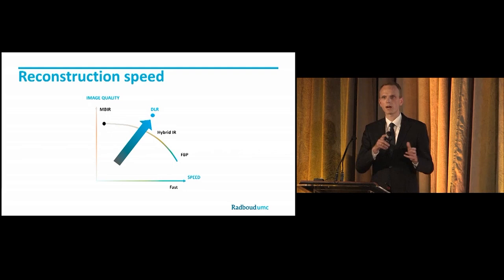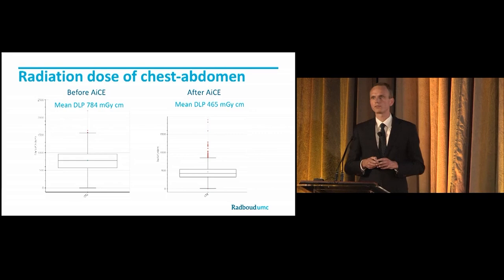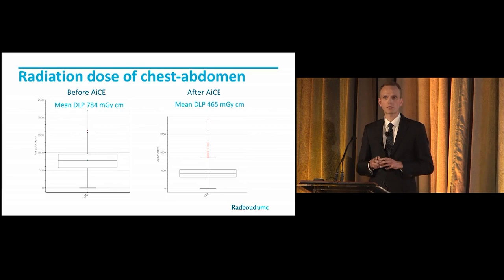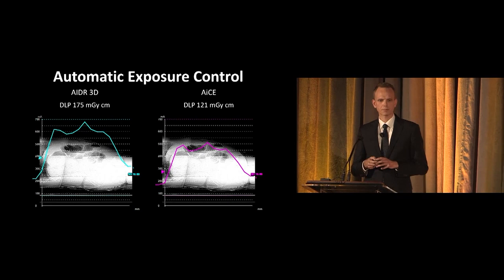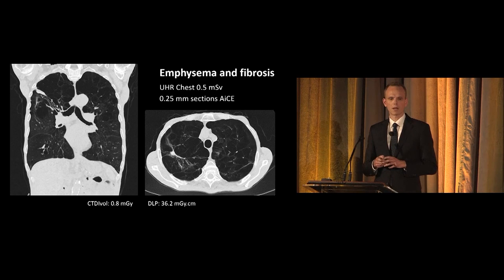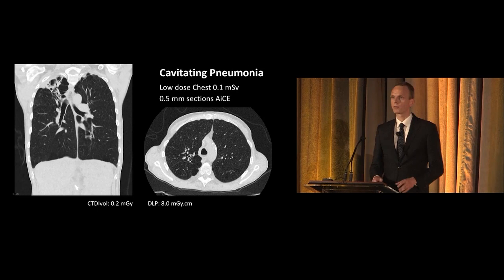How much does it reduce the dose? Here's an overview of dose reports from a high-resolution Precision scanner for standard chest CT and abdomen scans — on the left, the months before ACE, and on the right, the months after ACE. We see that the dose in real clinical practice has been reduced by about 60%. ACE is also included in the automatic exposure control, which makes dose reduction easy with no trial and error. For the Genesis, the dose reduction is about 20%. Here's an example of an ultra-high-resolution scan of a patient with severe emphysema and lung fibrosis at 0.25-millimeter sections and a dose of 0.5 millisievert. And here's a low-dose chest CT of a patient with a cavitating pneumonia at a dose of 0.1 millisievert — about the same dose as an AP and lateral chest X-ray — with still very nice soft tissue image quality.